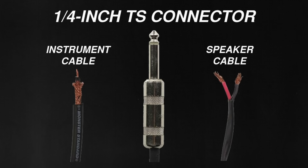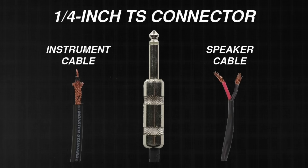On the other hand, an instrument cable is intended to carry instrument-level signals and therefore has a much thinner conductor surrounded by a shield or ground conductor. If you try using a speaker cable as an instrument cable, you'll probably hear a lot of noise. And if you try using an instrument cable as a speaker cable, it may cause overheating, as the conductor is not intended for amplifier-to-speaker connections.